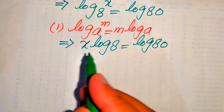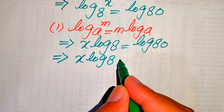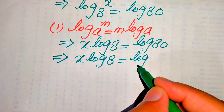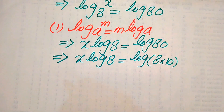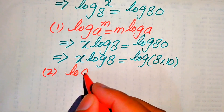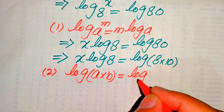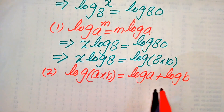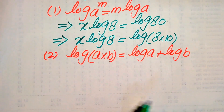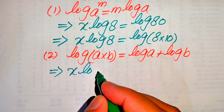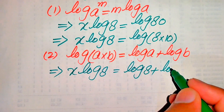Now in the next step we focus on the right hand side. We rewrite it as x times log 8 equals log of 8 times 10, breaking 80 as 8 times 10. Then we apply the second property of log: log of a multiplied by b equals log a plus log b. So the right hand side becomes log 8 plus log 10.